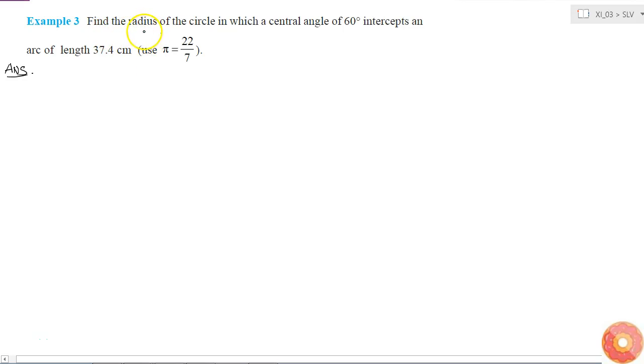We are asked to find the radius of a circle. We are given that a central angle of 60 degrees intercepts an arc length of 37.4 centimeters. So if we consider a circle, and if this is our center, it is said that if this angle is 60 degrees, then the arc length is 37.4 centimeters.